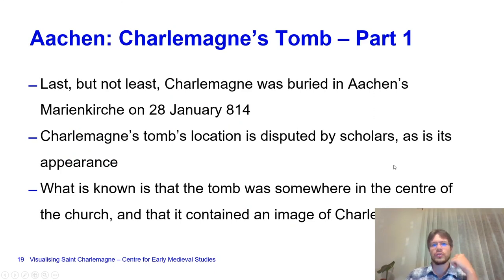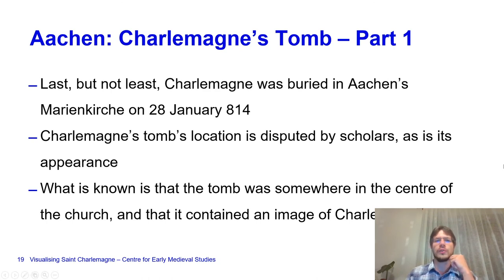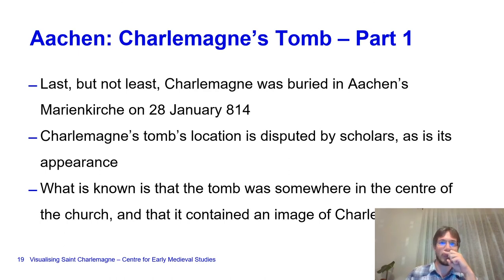Charlemagne was buried in Aachen's Marienkirche on the 28th of January, 814, and his tomb's location is disputed by scholars as is its appearance. We are not exactly sure what it looked like nor where it was. What we do know is that the tomb was somewhere in the center of the church and contained an image of Charlemagne seated.